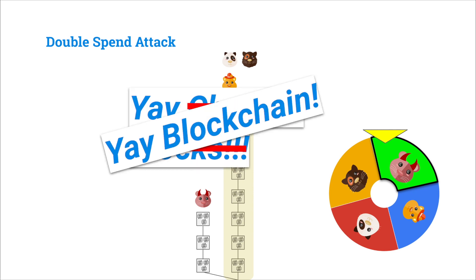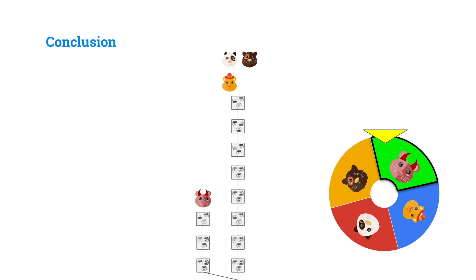What we have here is called probabilistic finality. There is no 100% guarantee that the transactions in the longest chain right now will be in the longest chain in the end, but we can say with very high probability that the longer the longest chain gets relative to a malicious actor's fork, the lower the chance there is of a transaction in the longest chain getting reverted. We owe this all to having this chain of blocks where all blocks have hash pointer dependencies on one another, so you can't change history without changing everything that happened after it. We call this the blockchain — really just a data structure of a list of blocks connected through hash pointers, where each block has a dependency on the block that came before it.